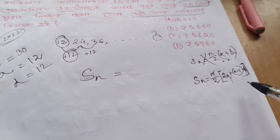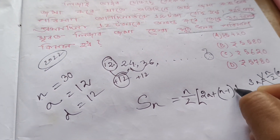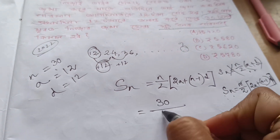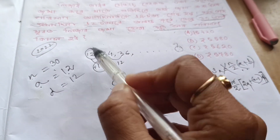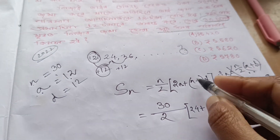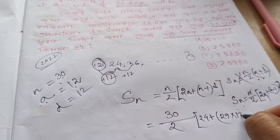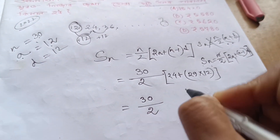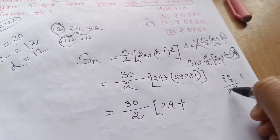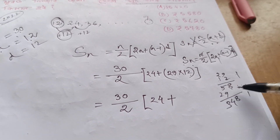Here, n is 30 days, a is 12 (the starting deposit), and d is equal to 12. So n minus 1 equals 30 minus 1 equals 29, and d is equal to 12. Computing: S(30) = 30 by 2 into bracket 2 times 12 plus 29 into 12.